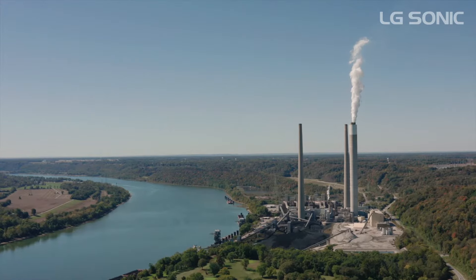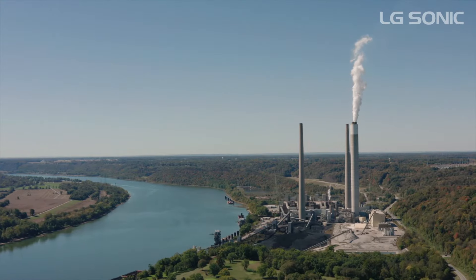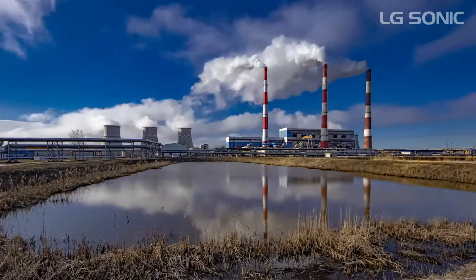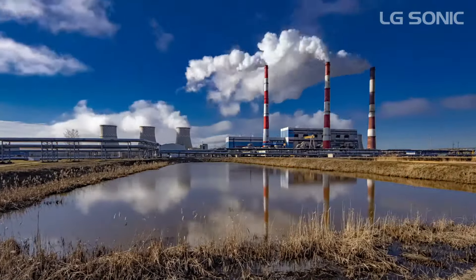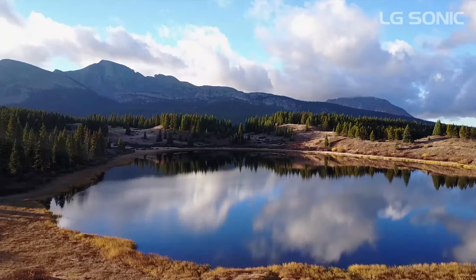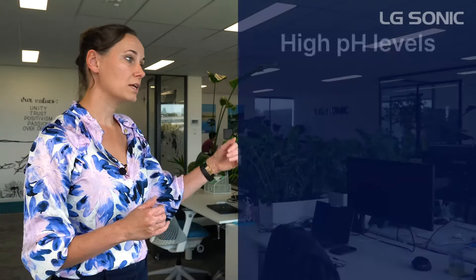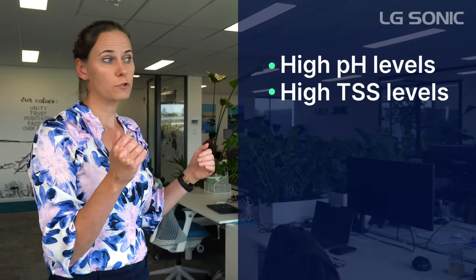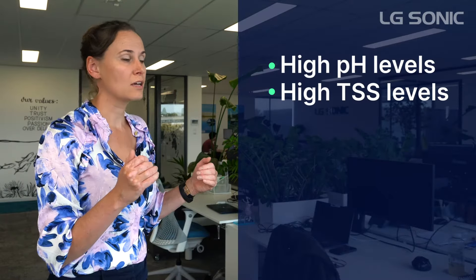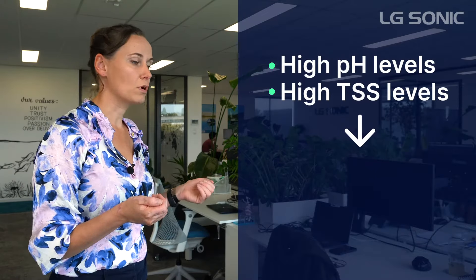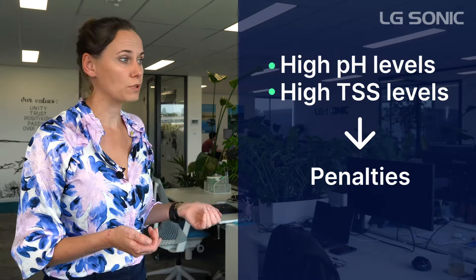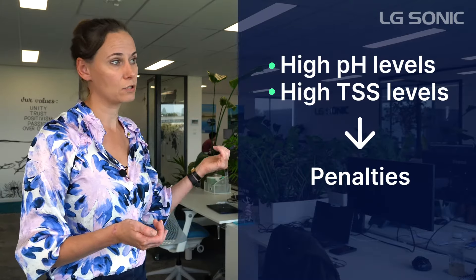For many of our customers, they are discharging their water into rivers or surface water, and they need to keep their water quality under certain pH and TSS limitations. This is important because when you discharge your water, you don't want to affect the ecosystem. Once pH or TSS levels become too high, those companies may run into fines set by the EPA for exceeding those limits.